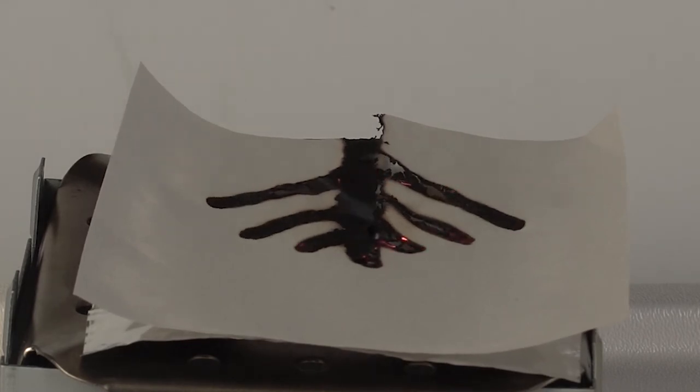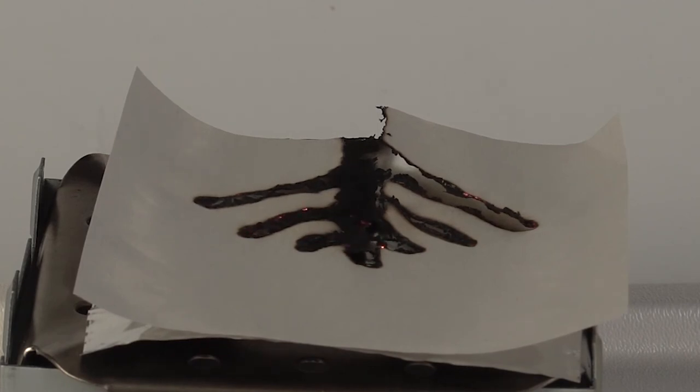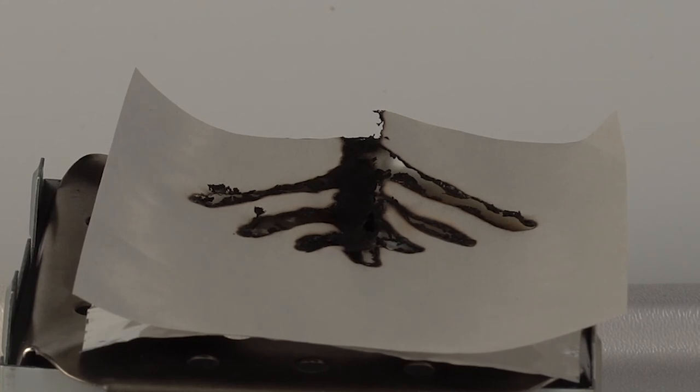However, because sodium nitrate decomposes into sodium nitrite and oxygen when heated, there is a higher concentration of oxygen on the parts of the paper where you have painted your pattern, as opposed to the concentration of oxygen in the air. This is why the parts of the paper painted with sodium nitrate smolder faster and more strongly, revealing your pattern as a burned image on the paper.